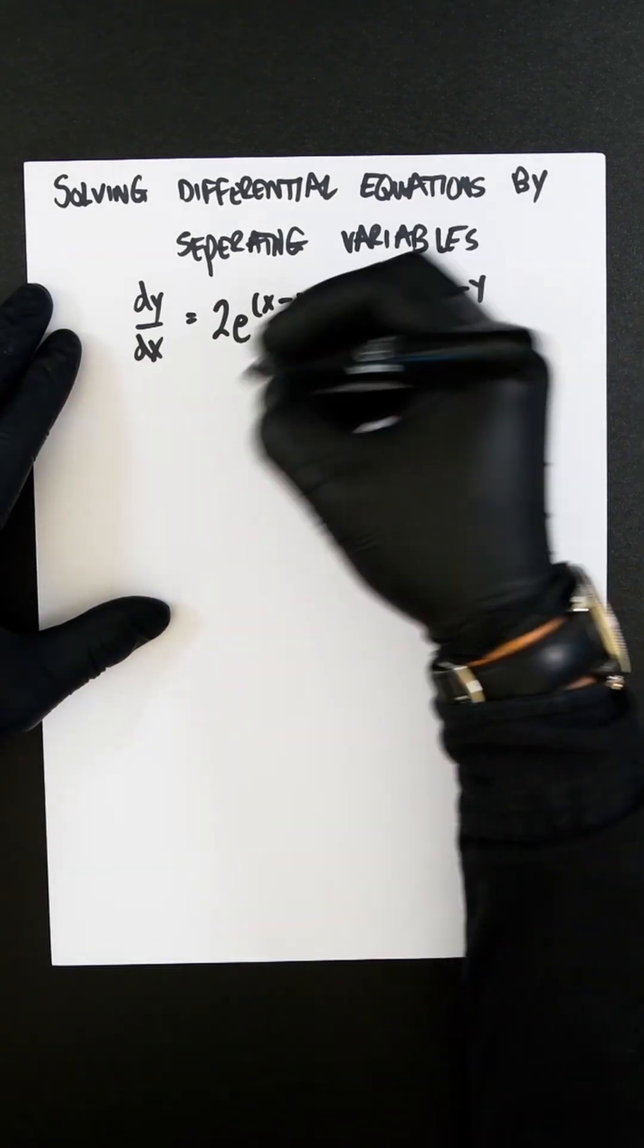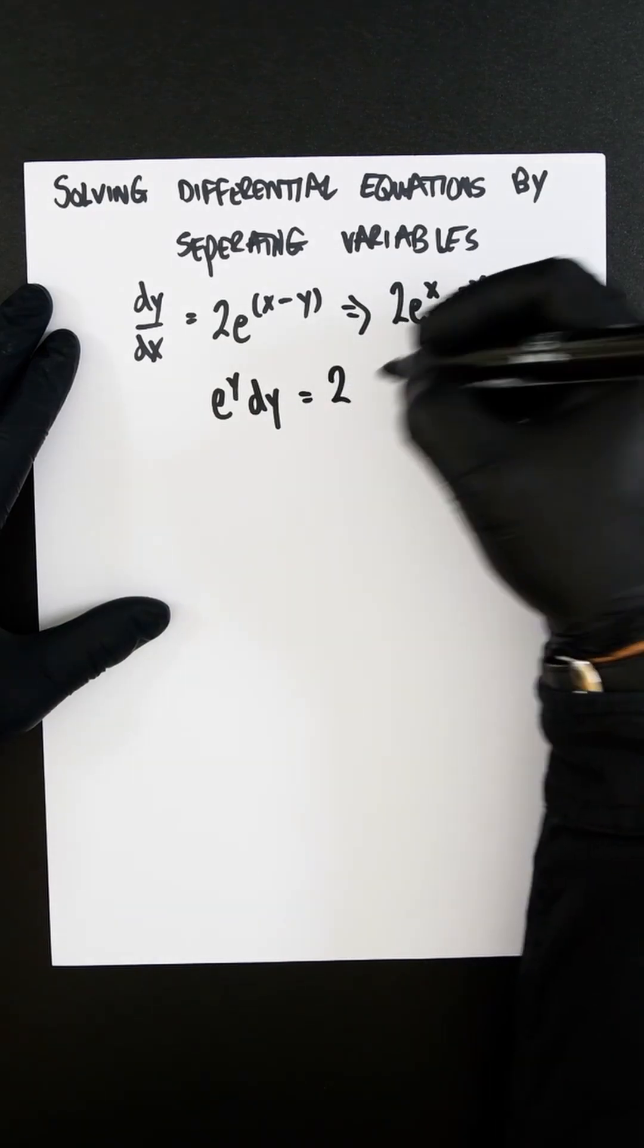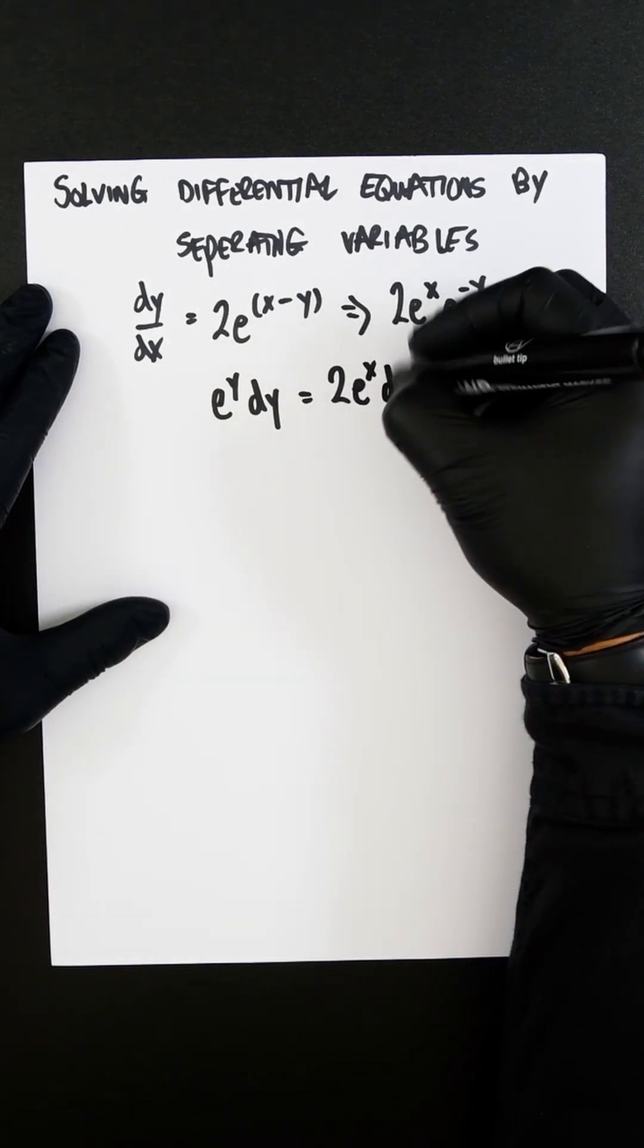So you're going to now get e^y dy, which equals 2e^x dx.